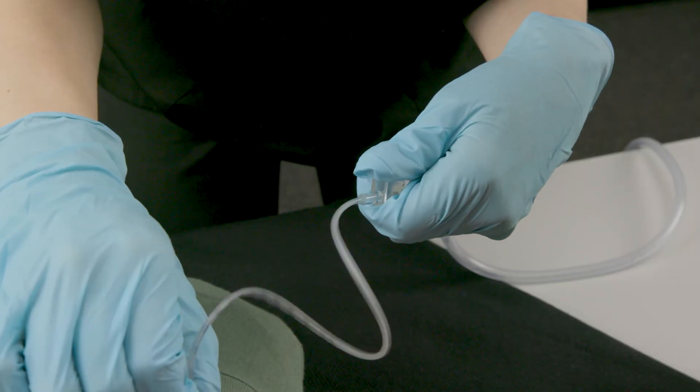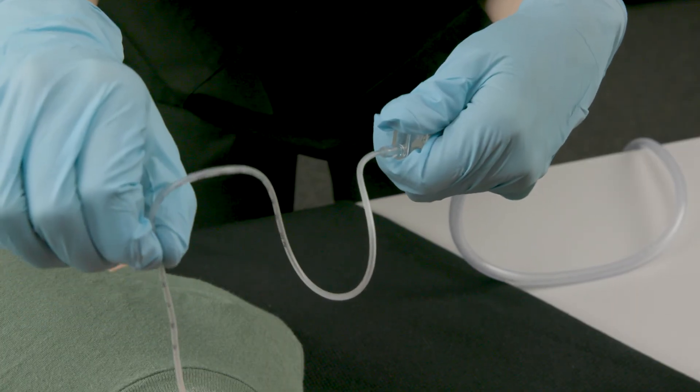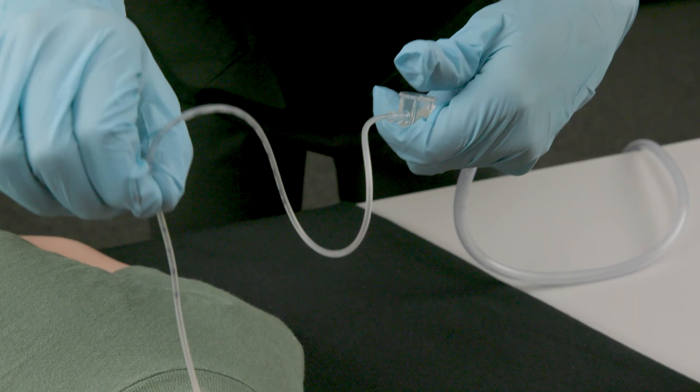As you roll and pull the catheter out of the trach tube, occasionally lift your thumb off the thumb port. This short release of suction pressure helps prevent tracheal tissue damage and helps move secretions up the catheter. Do not lift your thumb too frequently.